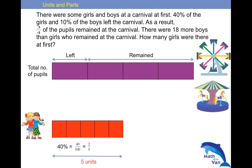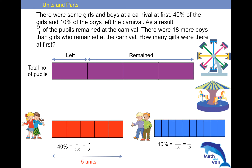Let's look at the boys now. For the boys, we are told that 10% of the boys left. So 10% as a fraction would be 1 over 10. Looking at the denominator 10, I will draw 10 parts.